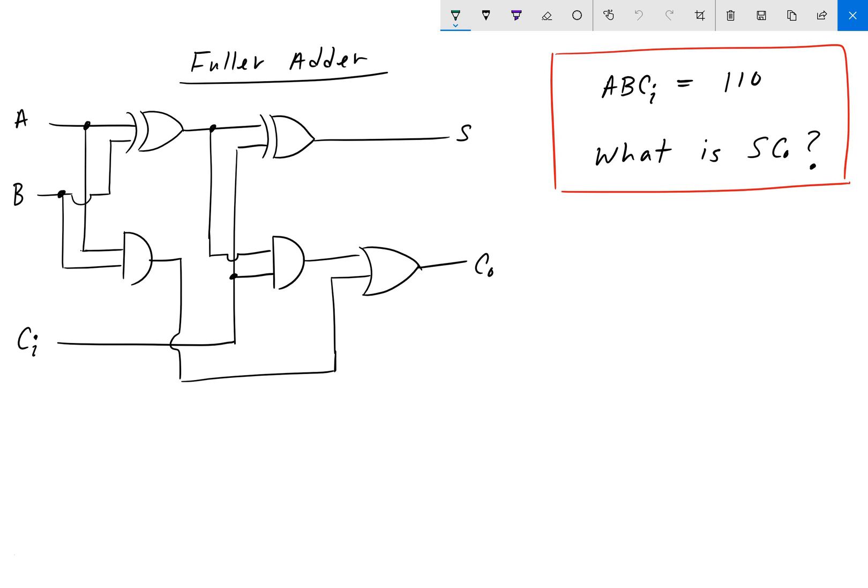So C_I is the carry bit and we are looking for S, the sum, and C_O, the carry out bit.